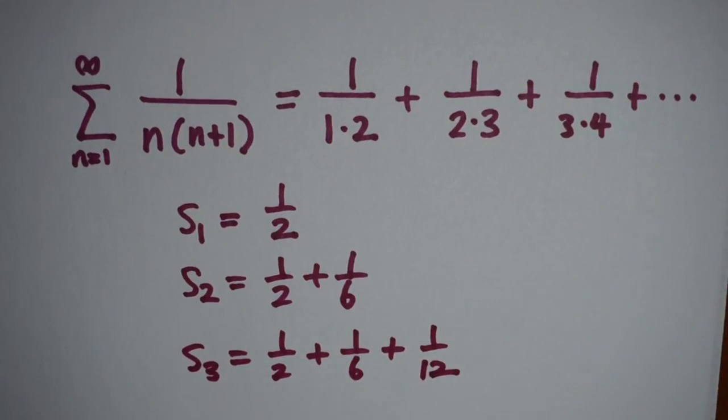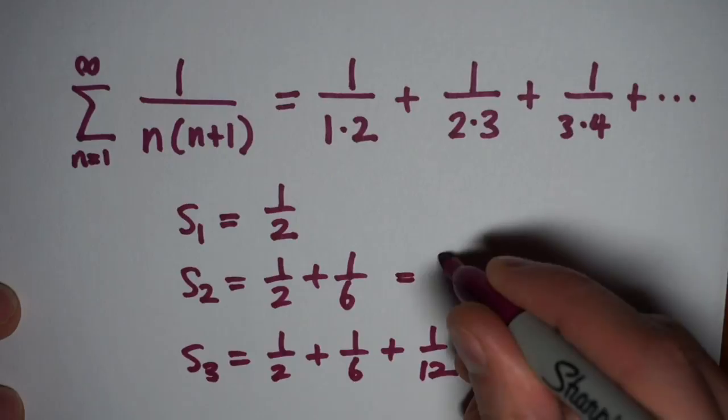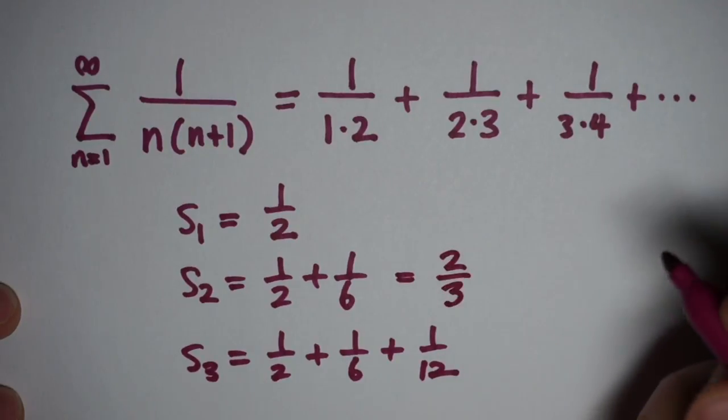If the limit of these partial sums exists, we call that the sum of the series. So generally, it is not possible to tell what the limit of the partial sums is, unless you can get a nice closed formula for each partial sum.